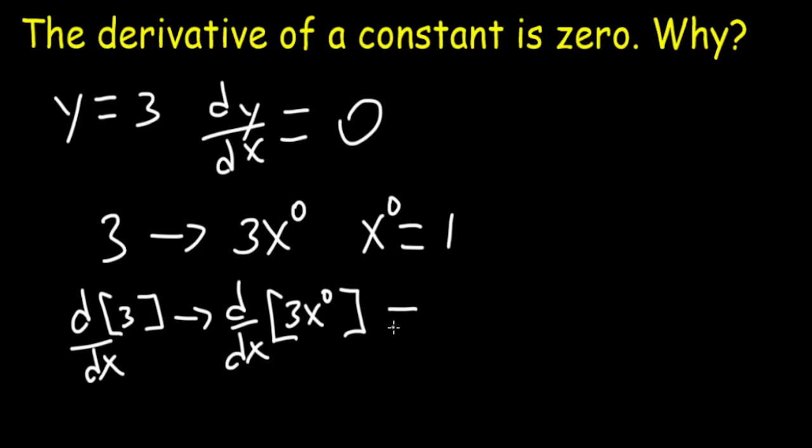So if you take the derivative using the power rule, you have 0 times 3x to the 0 power minus 1, which is 0 times 3x to the minus 1.